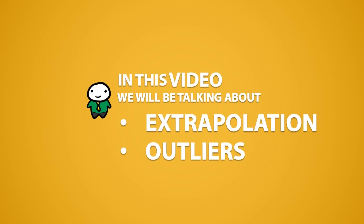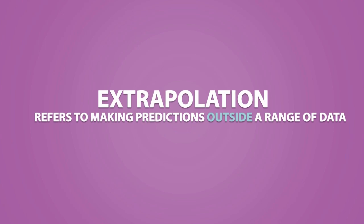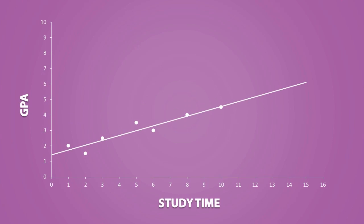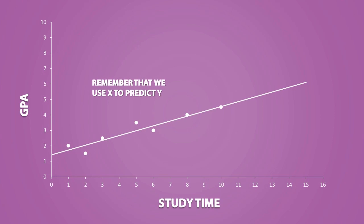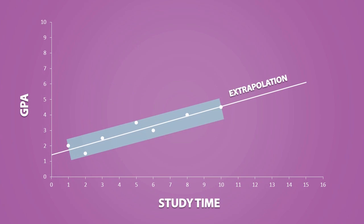In this video we will be talking about extrapolation and outliers. Extrapolation refers to making predictions outside a range of data. Last video we used this graph to predict a student's GPA based on how much they study each week. We use X to predict Y. For example, if someone only studies for 7 hours a week, we predict their GPA to be about 3.6. It is okay to make these kinds of predictions because the dataset covers this portion of the regression line. Any predictions made outside of this range of data is called extrapolation.